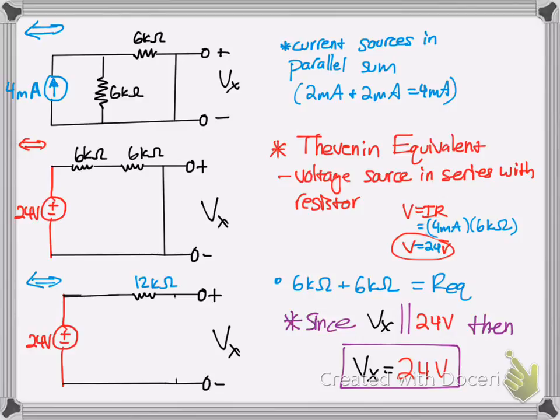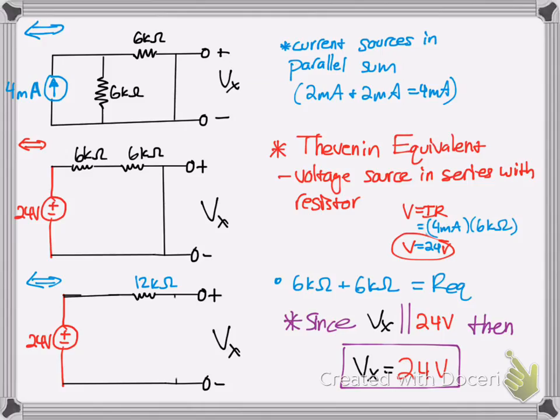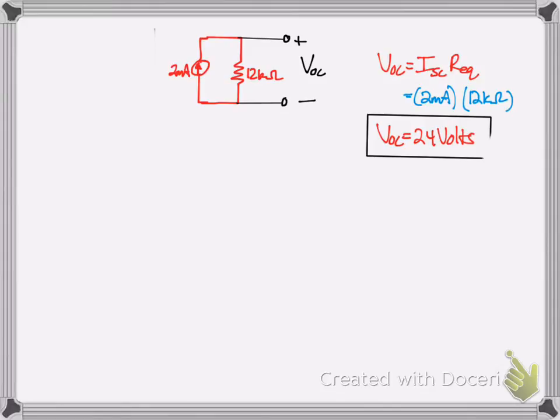Now if you didn't see that, we can actually check our work here by doing another exchange and converting that battery into a current source. Doing a Norton exchange here and putting the resistor in parallel with the current source. Then we can find the voltage. The short circuit current times the equivalent resistance, which we calculated to be 12 kiloohms. We have 2 milliamps and 12 kiloohms, so 12 times 2 is 24 volts. The voltage sources in parallel produce the same voltage there.